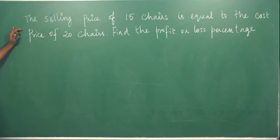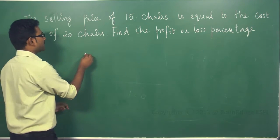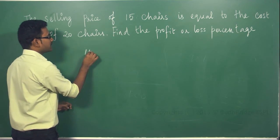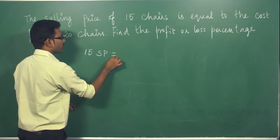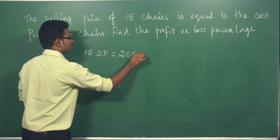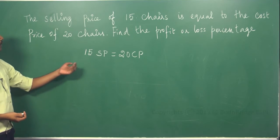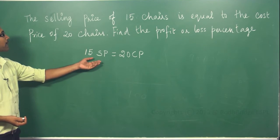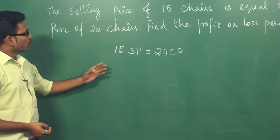The selling price of 15 chairs is equal to the cost price of 20 chairs. Find the profit or loss percentage. It is very simple. The question can be interpreted as: 15 articles selling price is equal to 20 articles cost price.